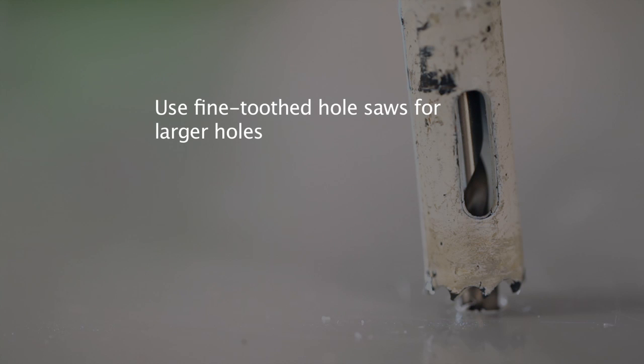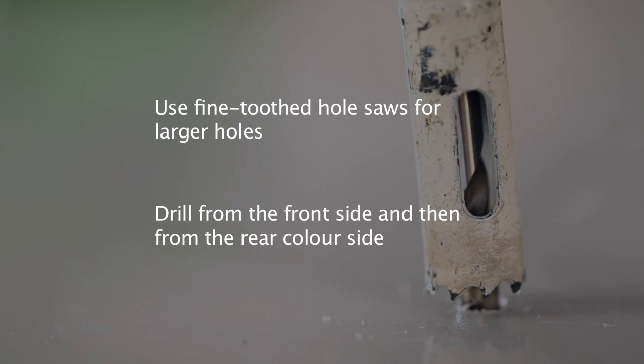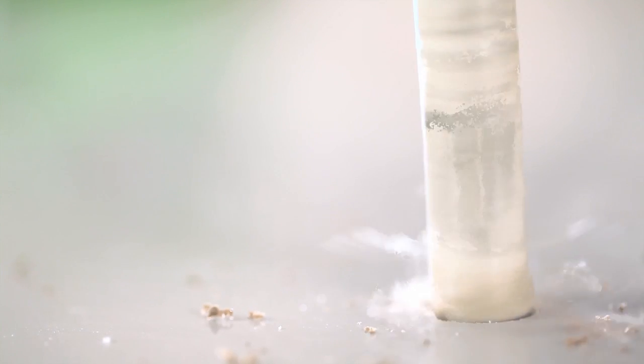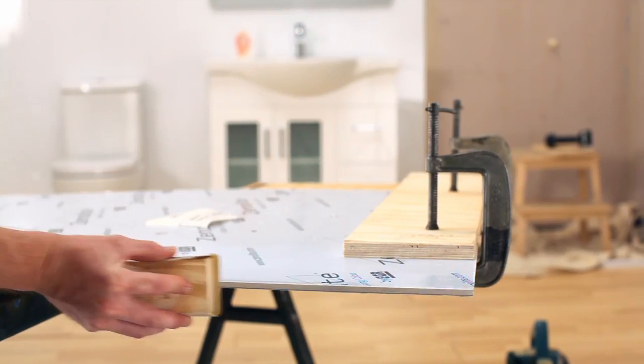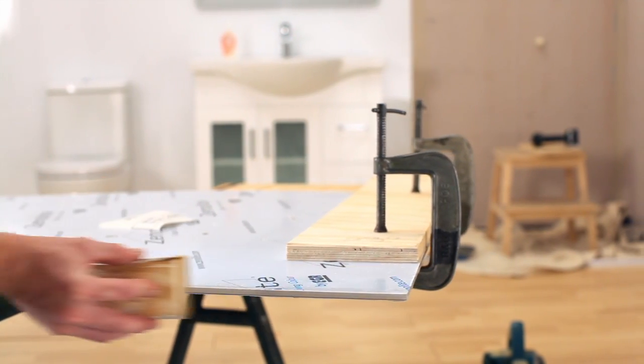When using a hole saw, you must cut from the front face or clear side of the Xenolite Plus panel to halfway through the sheet. Then turn the sheet over and finish the hole from the colour side. Once the Xenolite Plus panel has been cut and drilled to your requirements, the edges must be sanded or planed to a smooth finish.